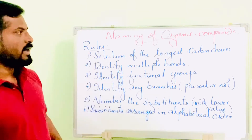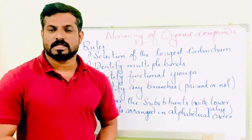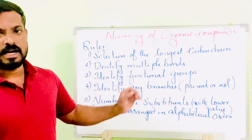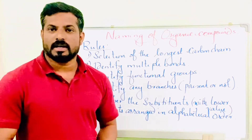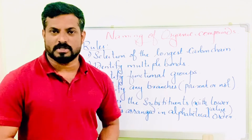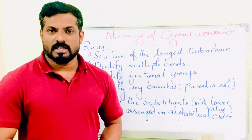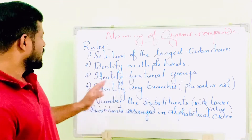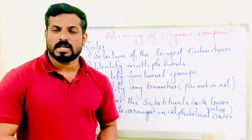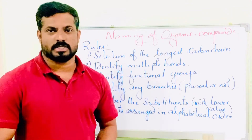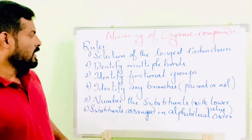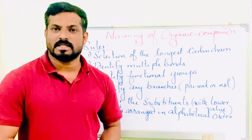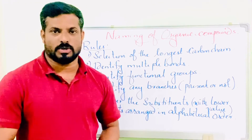Rule number one: selection of the longest carbon chain. First of all we want to find out which is the longest carbon chain. Rule number two: identify the presence of multiple bonds in the parent chain — how many multiple bonds are there or not. Rule number three: identify any functional group present or not. Rule number four: identify any branches present — that means any substituents attached or not.